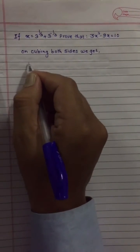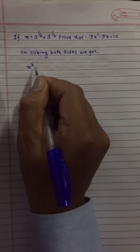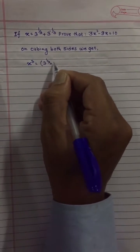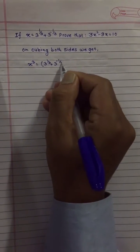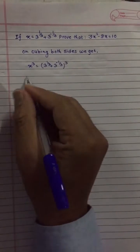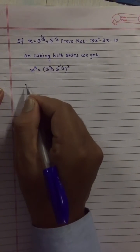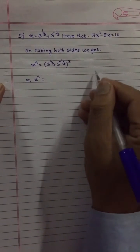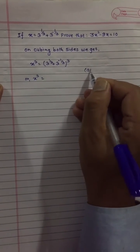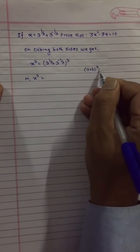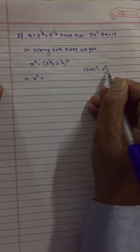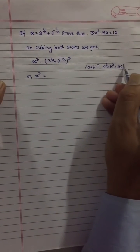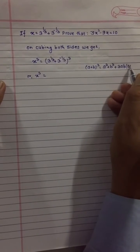On cubing both sides, x cubed is equal to 3 to the power 1 by 3 plus 3 to the power minus 1 by 3, all cubed. Now using the formula: a plus b, cubed, is equal to a cubed plus b cubed plus 3ab times a plus b.